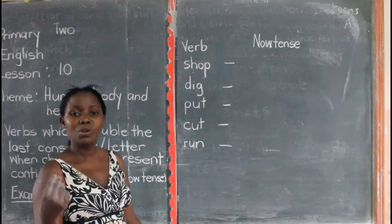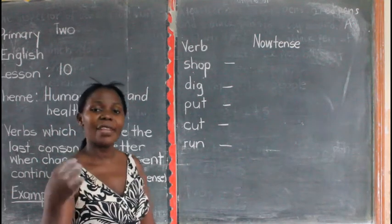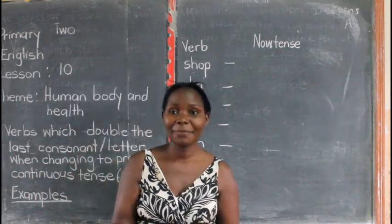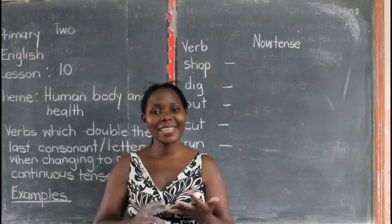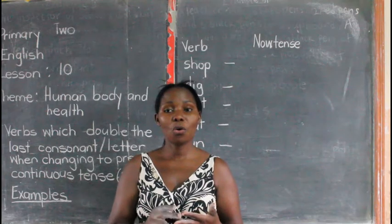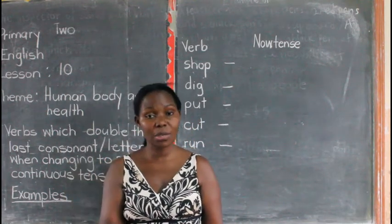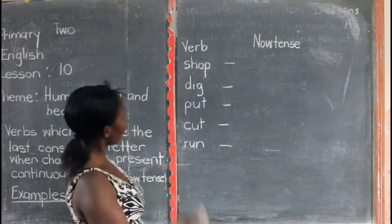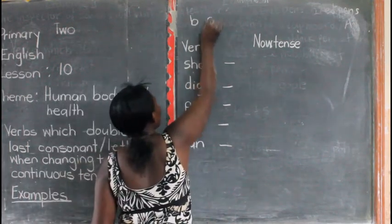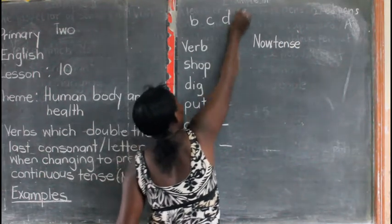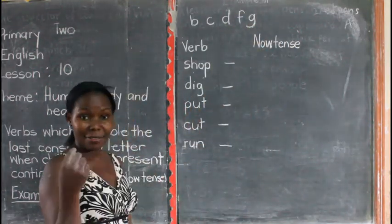How can you know that it is a consonant letter? We have the letters of the alphabet. When you remove A, E, I, O, U, the remaining letters are known as consonant letters — consonant letters like B, C, D, F, G, and a few more.